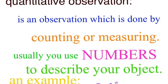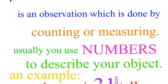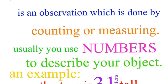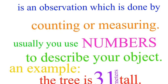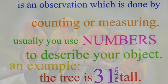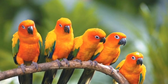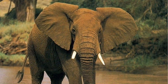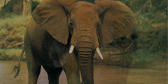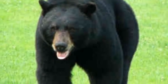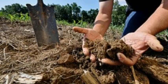Quantitative, in contrast, is done by counting or measuring. We almost always use numbers to describe it. So the tree is 31 meters tall, or that weighs 17 pounds. There are five parakeets. The elephant weighs 2.31 tons. The black bear is chasing me at 4.6 meters per second — okay, that's a fast bear.